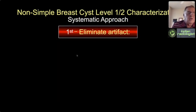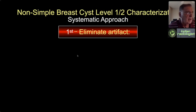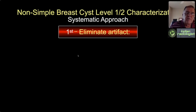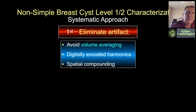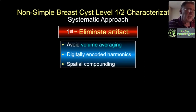We need a systematic approach because there are so many cysts. We don't want to biopsy any of them if we can avoid it, and we don't want to put a lot in follow-up because it will plug up our system. We're trying to detect cancers at an early stage, but we don't want to fill our system with false positives. Part of the reason we're seeing more non-simple cysts is because we've taken our scan parameters beyond their limits—frequency too high, dynamic range too wide.